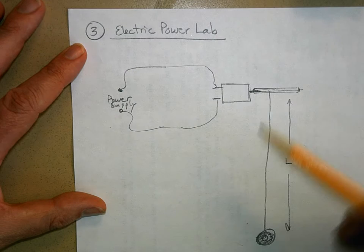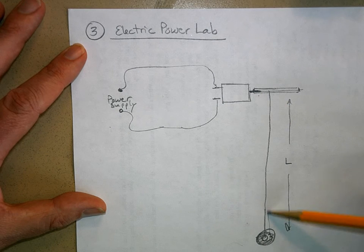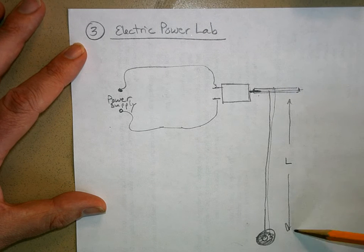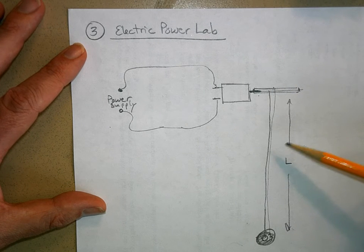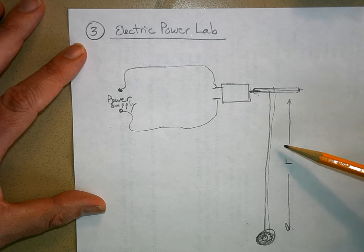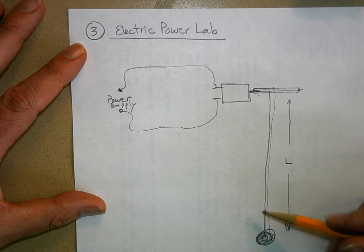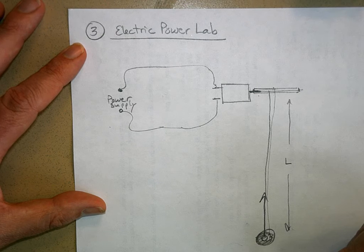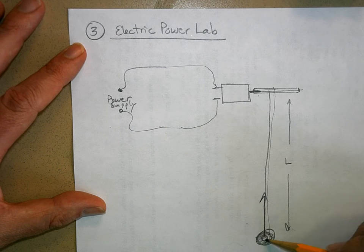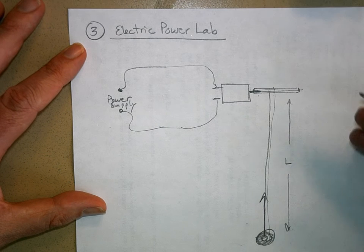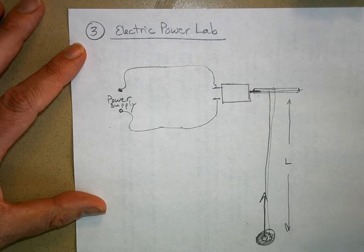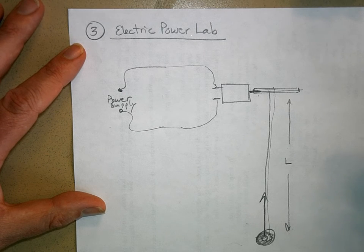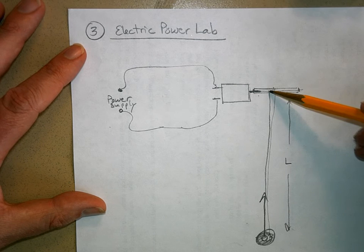We're going to have a certain length that we're going to start from. When you connect this circuit, the motor will spin, it will lift this weight up. When it's lifting the weight up, we're doing work, because we're lifting this force. The force is really the weight of the washer, and we'll figure out what that weight is. We're lifting it up a certain distance. When you do that, you're doing work.